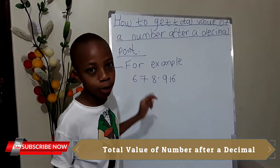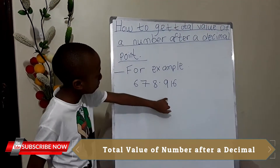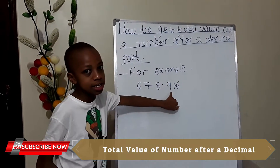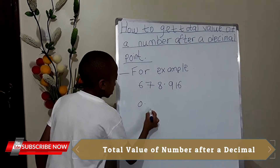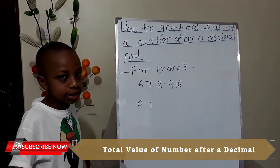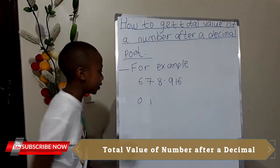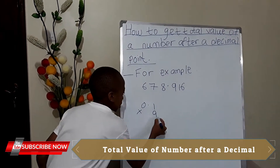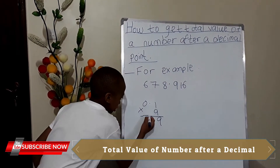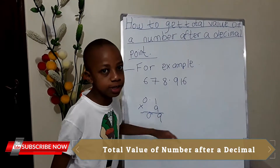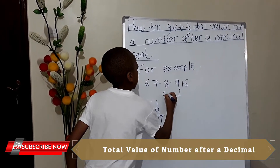They tell you to find the place value of all the numbers after the decimal point. As you can remember, the place value here is tenths. Tenths is written this way: 0.1. So that is tenths. If you want to get the total value of 9, you use the tenths and then you multiply by 9. And don't forget your decimal point — the total value of digit 9 is 0.90.